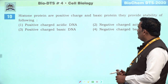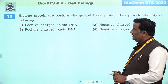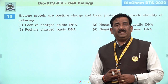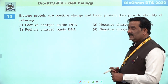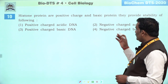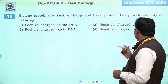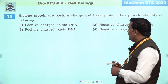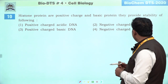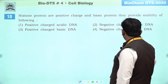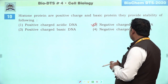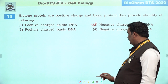Next question: histone proteins are positively charged and basic proteins. They provide stability of following. Histone protein, ya positive charge protein ko, DNA ki stability ke liye nucleic acid mein rakha jaata hai, genetic material ke saath bind up kiya jaata hai, jisse organism ki stability possible ho. Histone protein ek acidic charge ko neutral karta hai — positive charge negative ko neutral karta hai, stability provide karta hai. Isliye DNA — jo ki negatively charged aur acidic DNA hai — toh yeh humare liye second right answer banta hai.